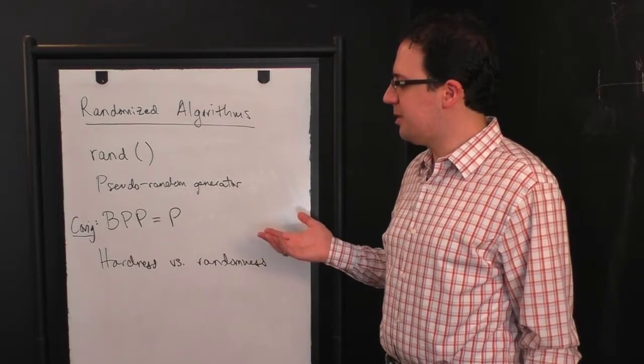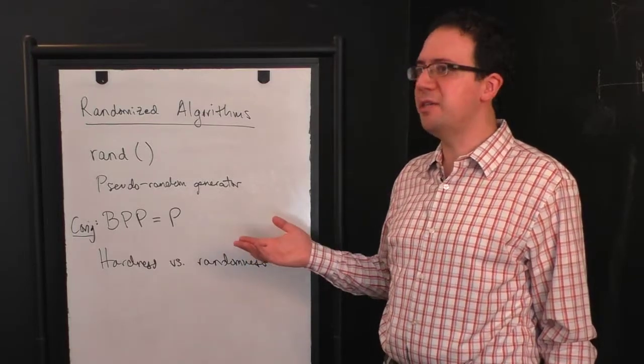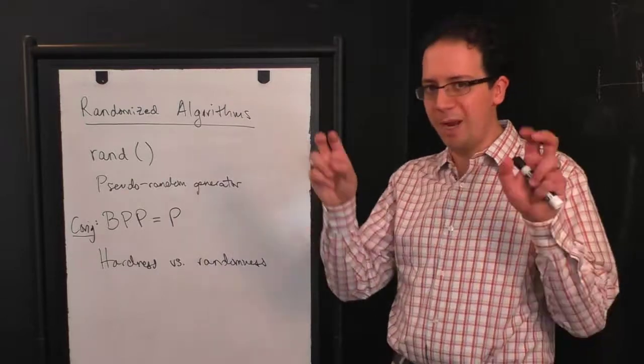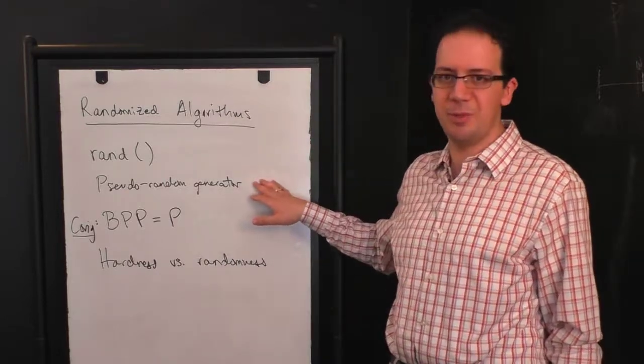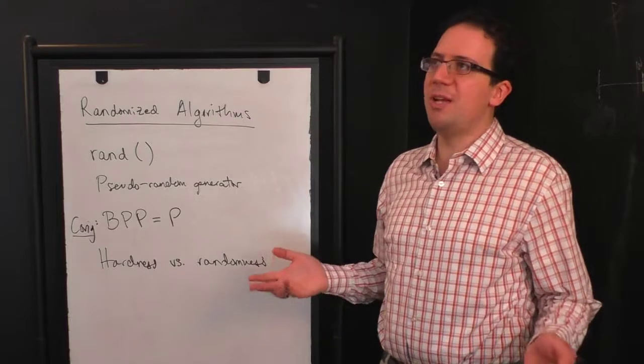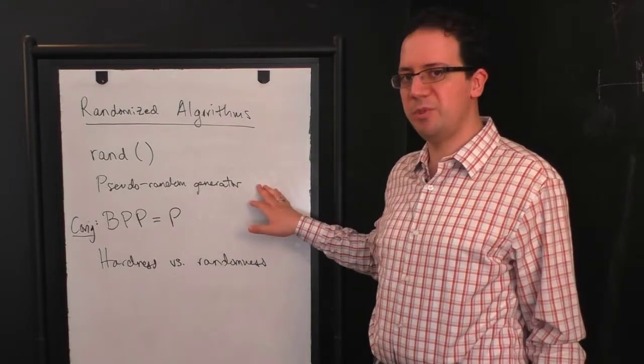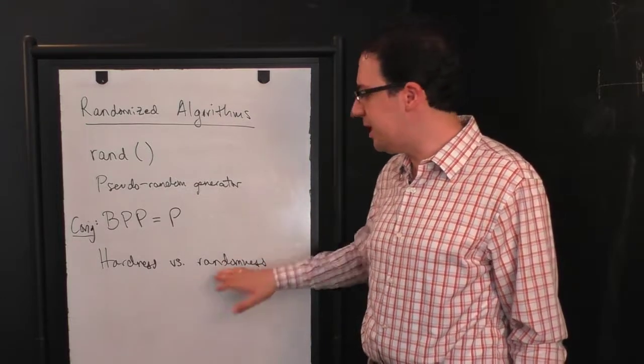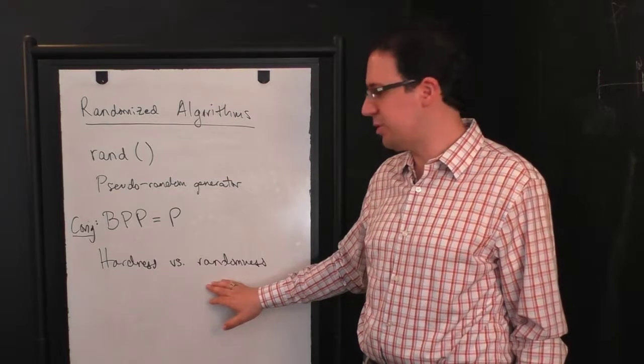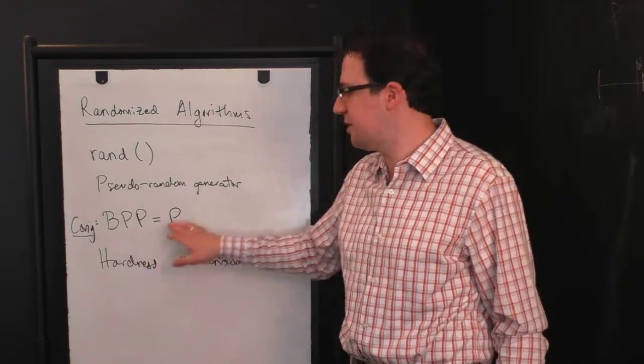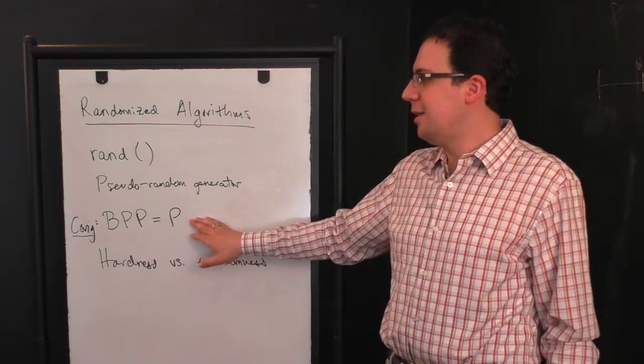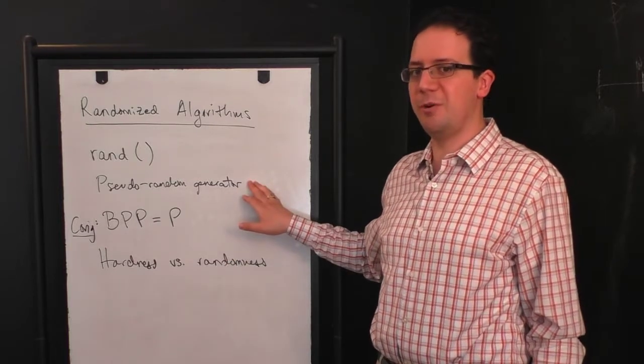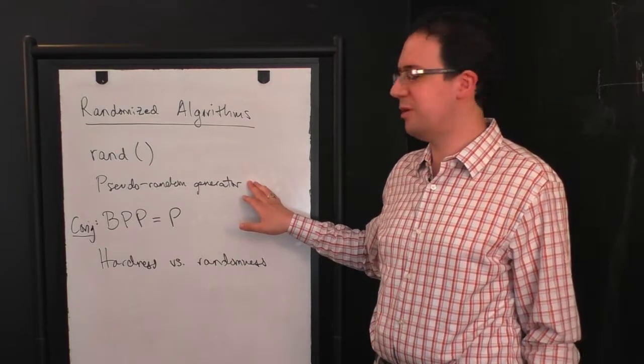And basically what this means is that what we do in practice, which is on your laptop when you use a randomized algorithm, you're actually using a deterministic pseudorandom generator, is more or less okay as long as the pseudorandom generator is good enough, right? Because even if the hardness versus randomness principle is true, even if there are sufficiently hard functions, even if this conjecture is true, that doesn't mean that your pseudorandom generator is good. It means there is some pseudorandom generator that's good enough.